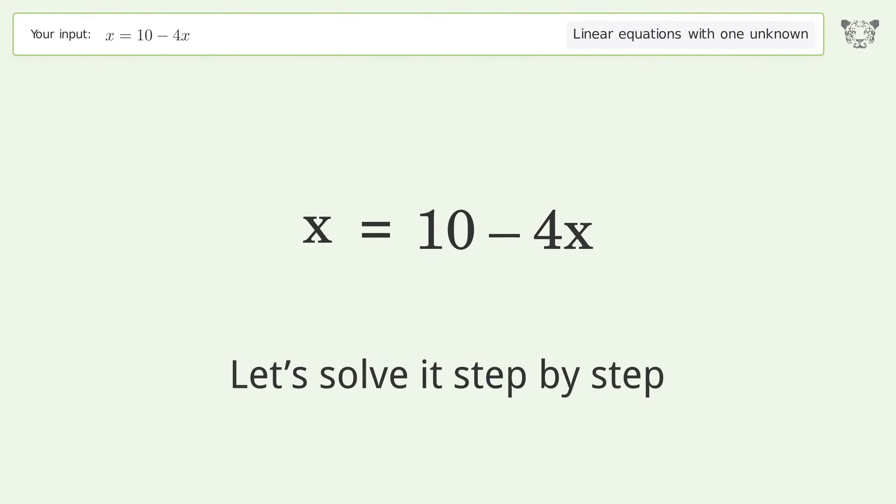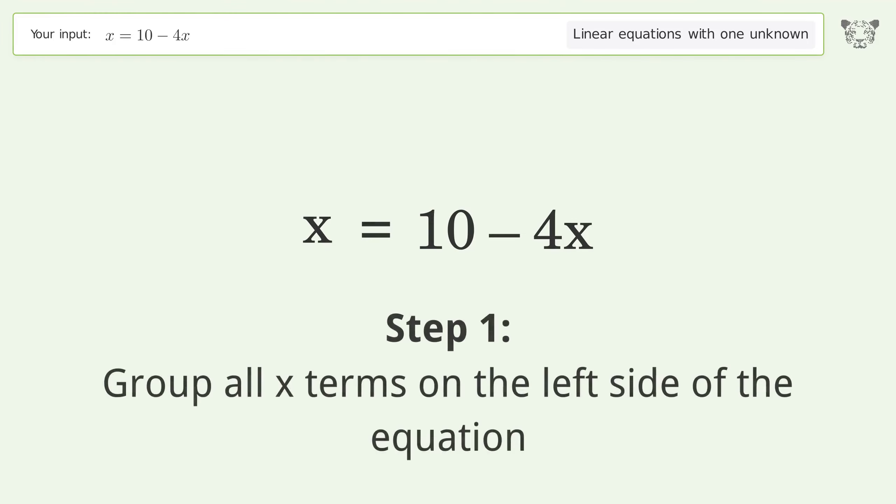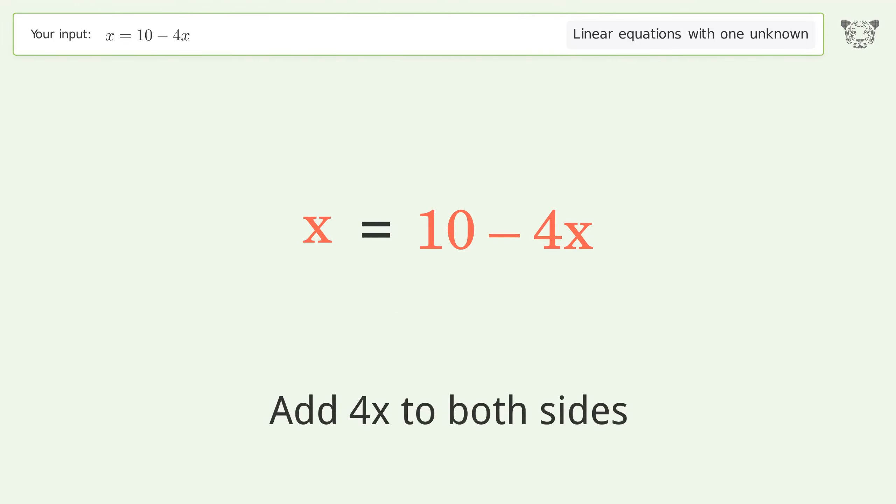Let's solve it step by step. Group all x terms on the left side of the equation. Add 4x to both sides.